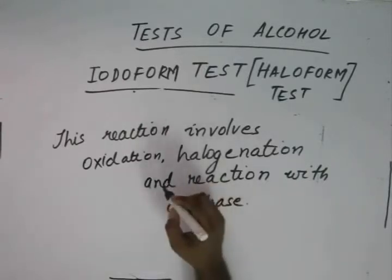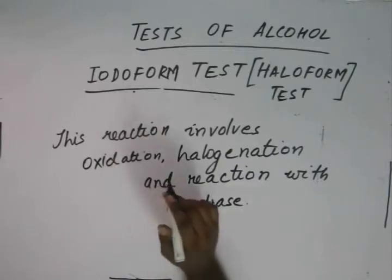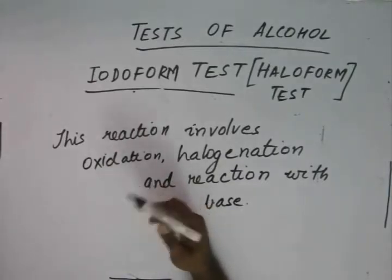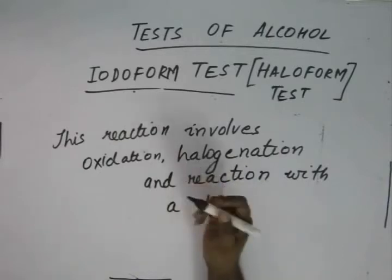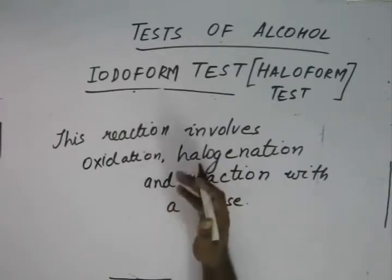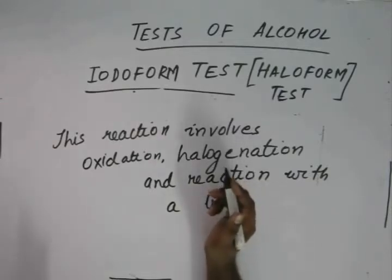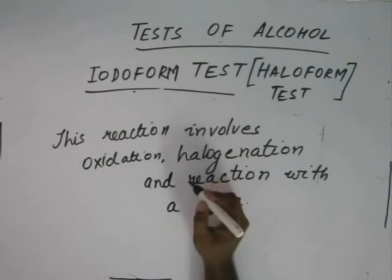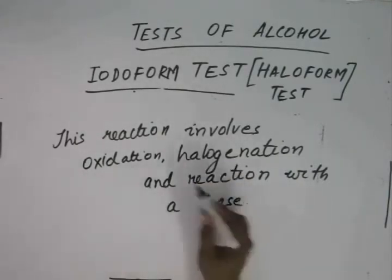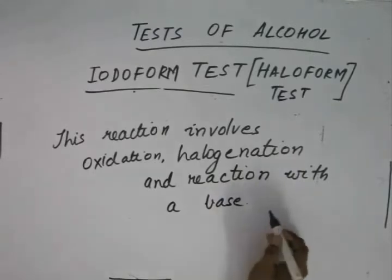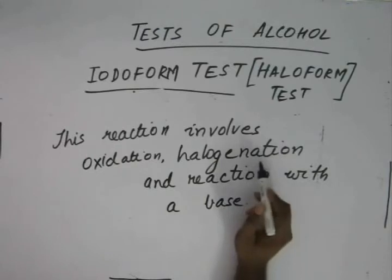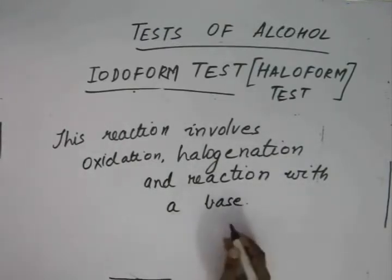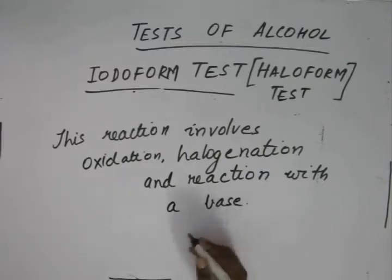Then halogenation takes place — the hydrogens attached to the terminal methyl group are replaced by halogens, whether I, Br, or Cl. After halogenation, the product reacts with a base to give us a salt of an acid and the haloform.